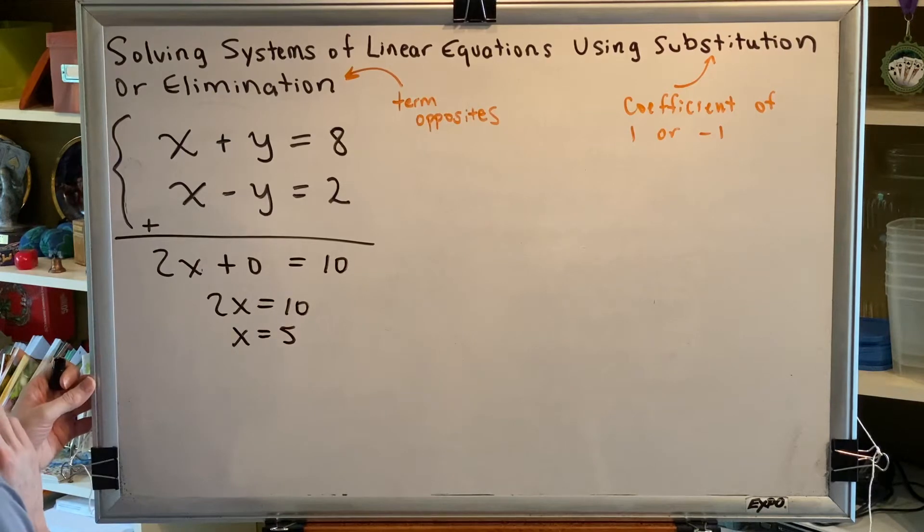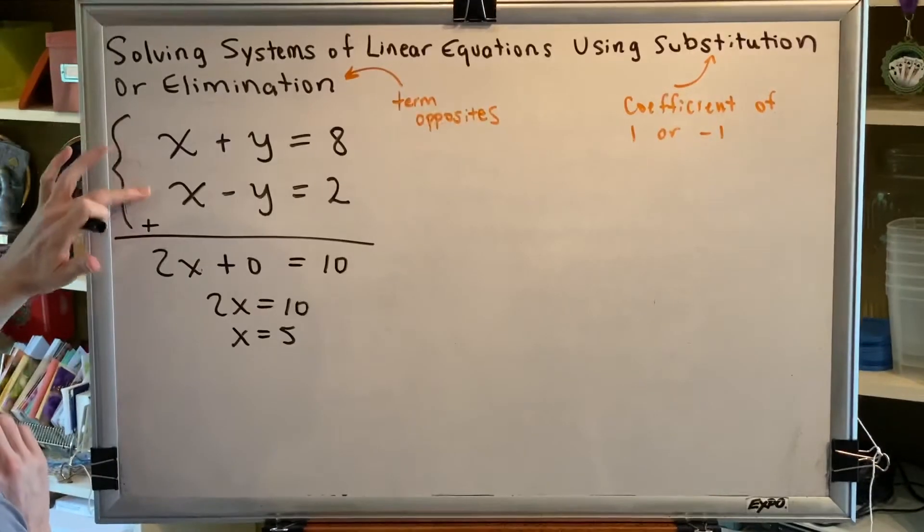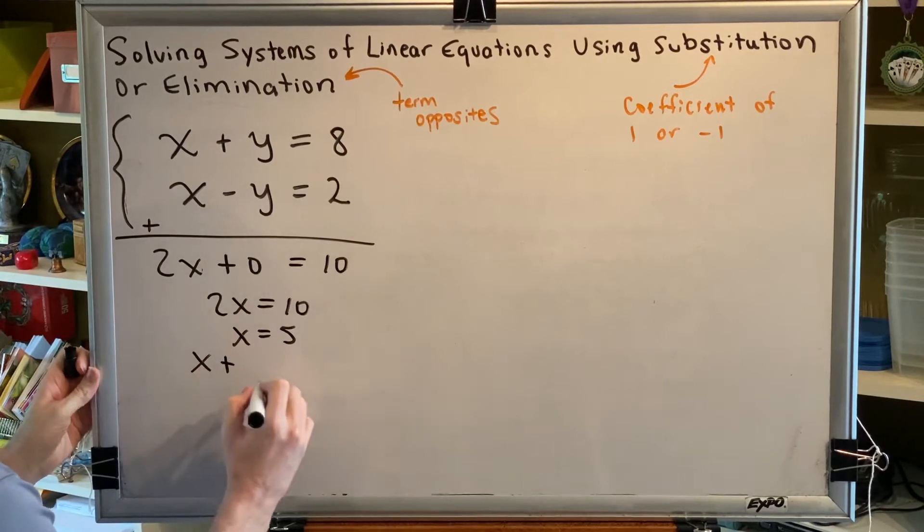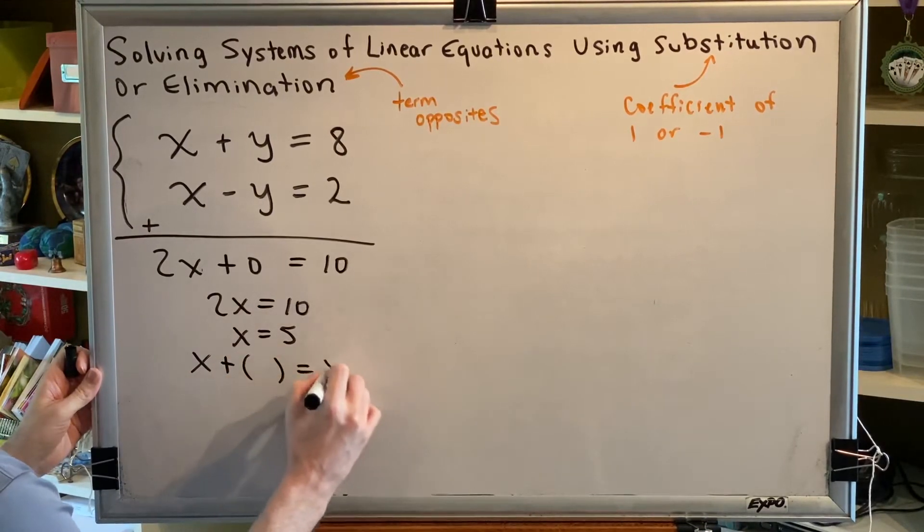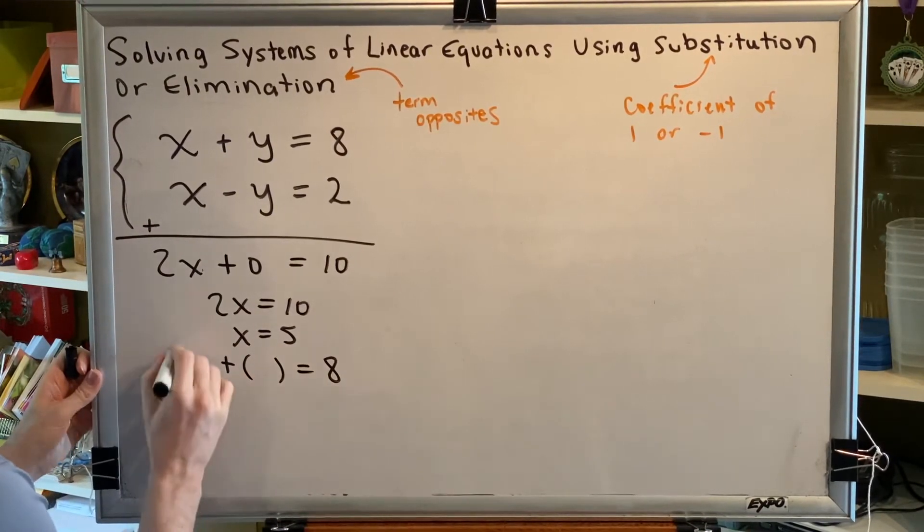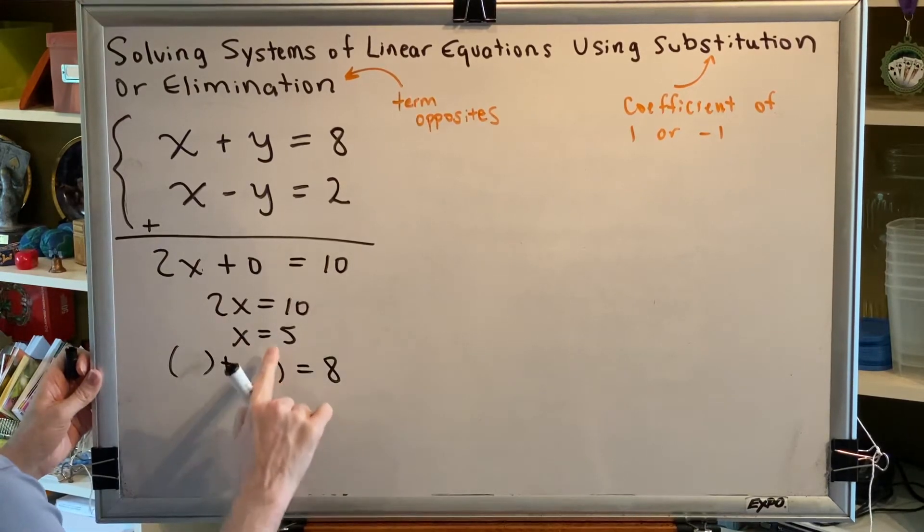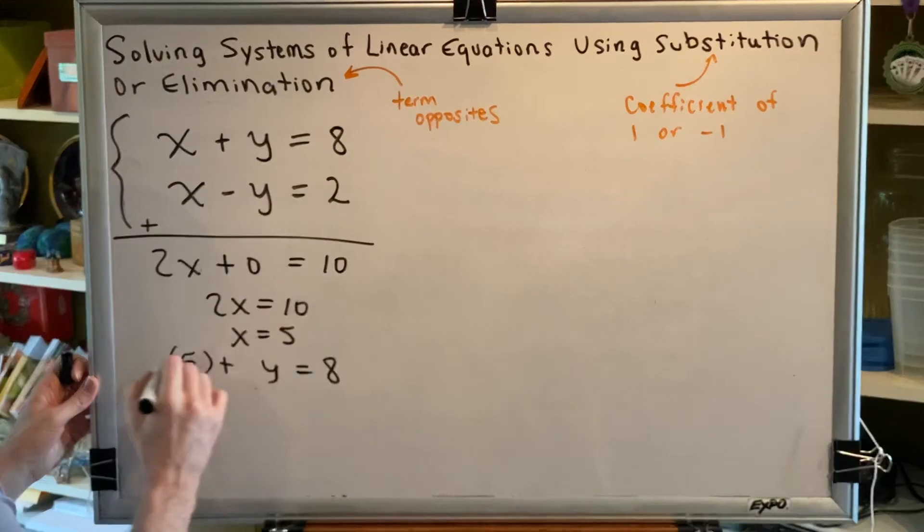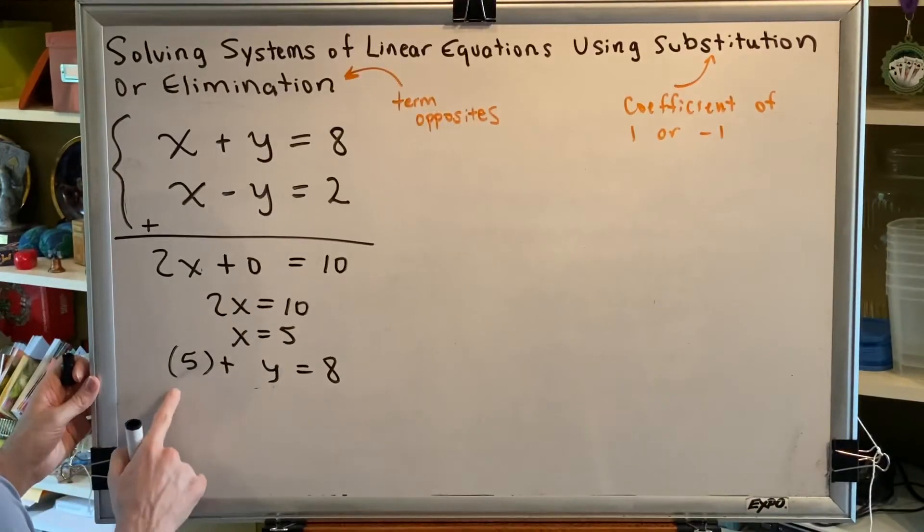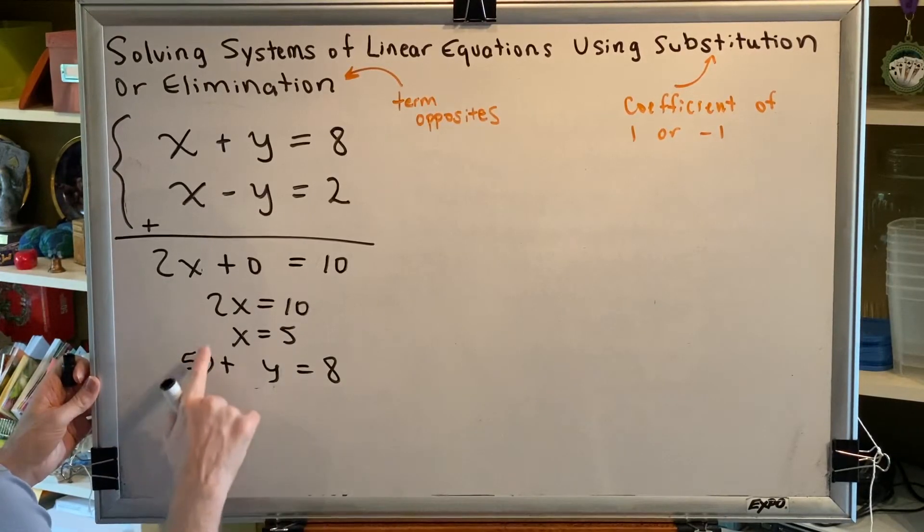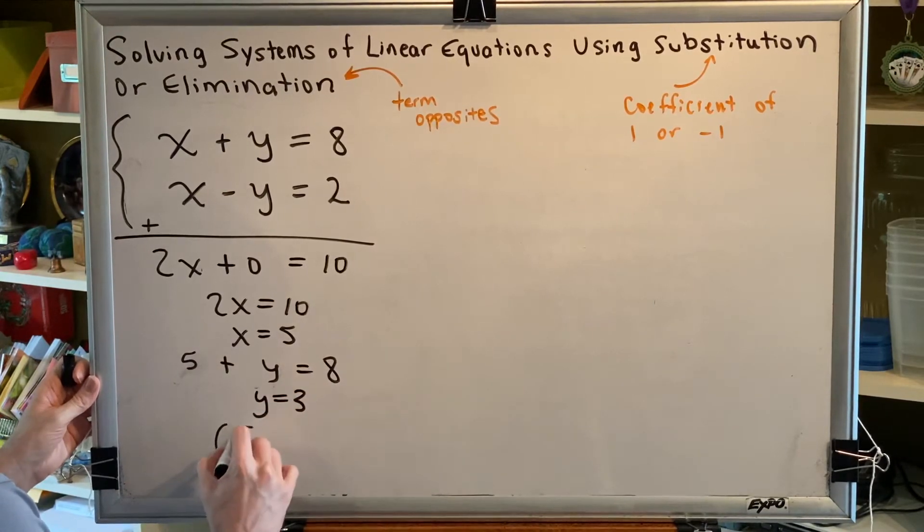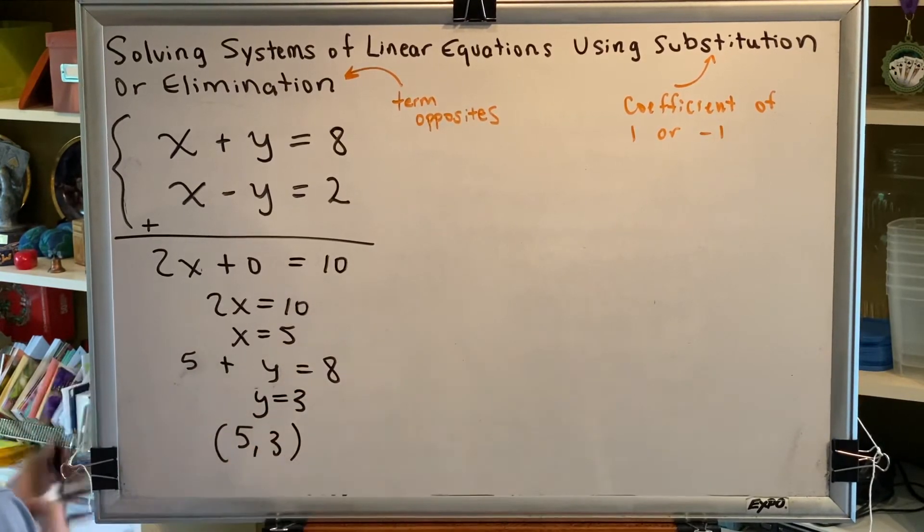And now if we want to find what y is, we just have to pick one of these equations to plug into. I'll pick the top one since it doesn't have any negatives in it. The top one says x plus y equals 8. So I'm going to replace the x with the value 5 that we found before. And I get 5 plus y equals 8. Subtracting 5 on both sides, y equals 3. So I get the ordered pair 5 comma 3.